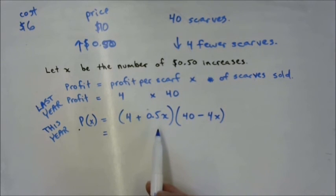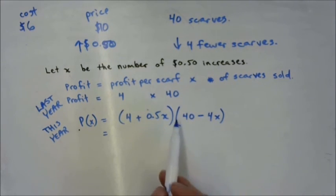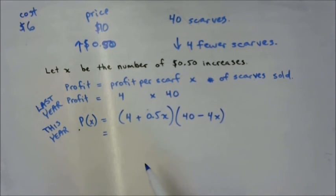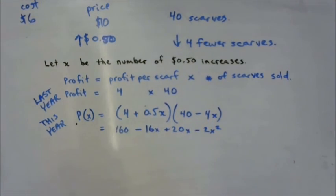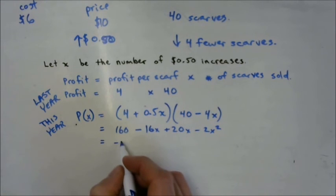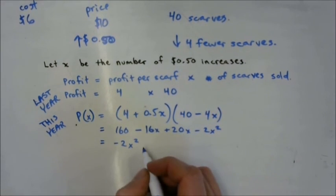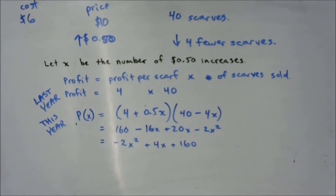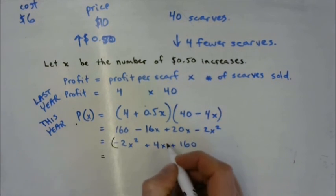What form are we in right now? Factored form — there's multiplication, there are two factors. But we can simplify this and get it back into standard form. Using FOIL — first times first, outside times outside, inside times inside, last times last — rearrange into standard form, group like terms: negative 2x² + 4x + 160.